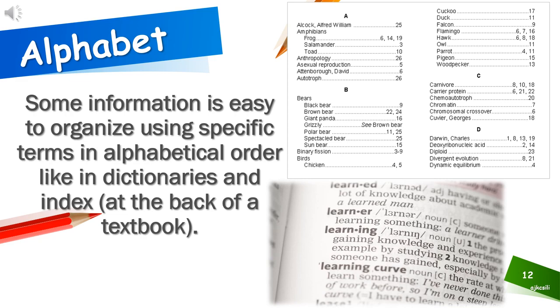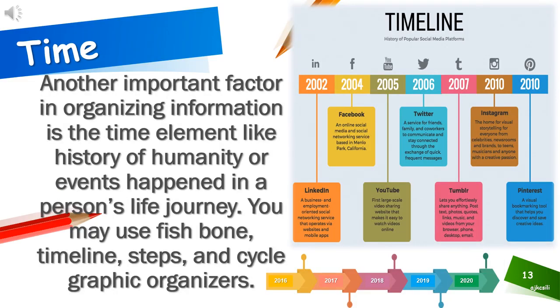Some information is easy to organize using specific terms in alphabetical order, like in dictionaries and indexes. Third, time — another important factor in organizing information is the time element, like history of humanity or events that happened in a person's life journey. You may use fishbone, timeline, steps, and cycle graphic organizers.